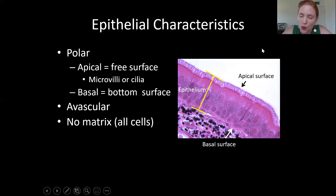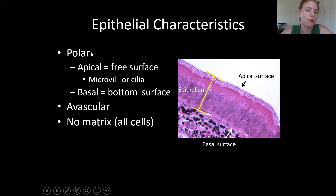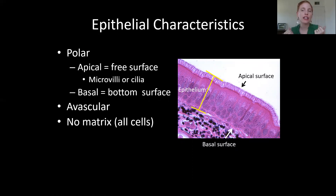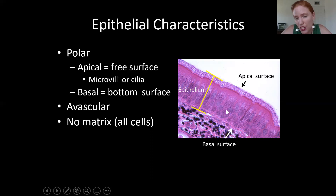When looking through the microscope, if you see free empty space, you must be at a surface, which means this is an epithelial tissue. Epithelial tissues are polar — not about charge, but about being different on one side than the other. Looking at an epithelial tissue, you can see microvilli on one side but not the other, so if you turn the picture upside down it looks different.